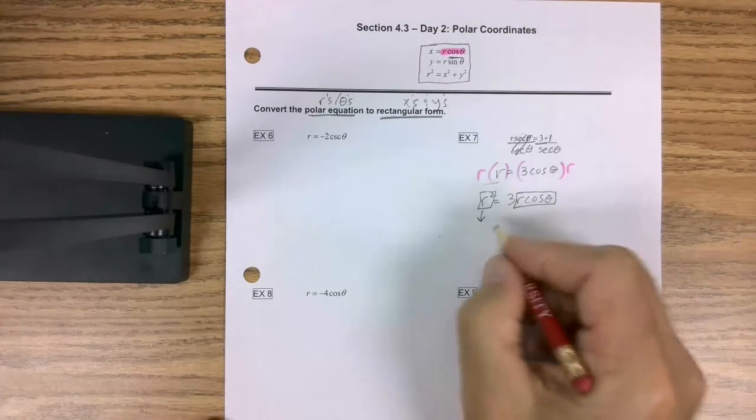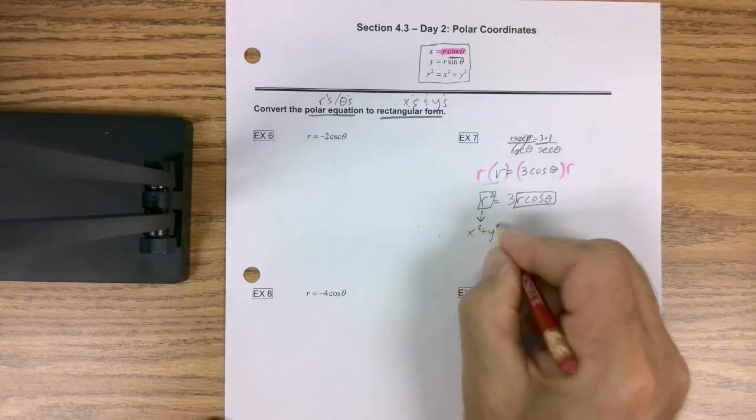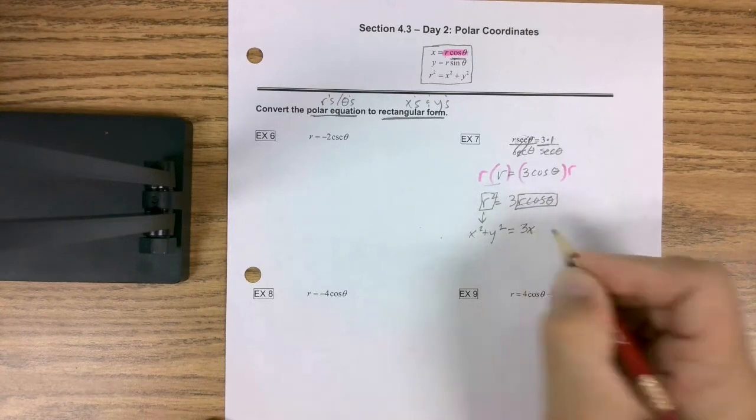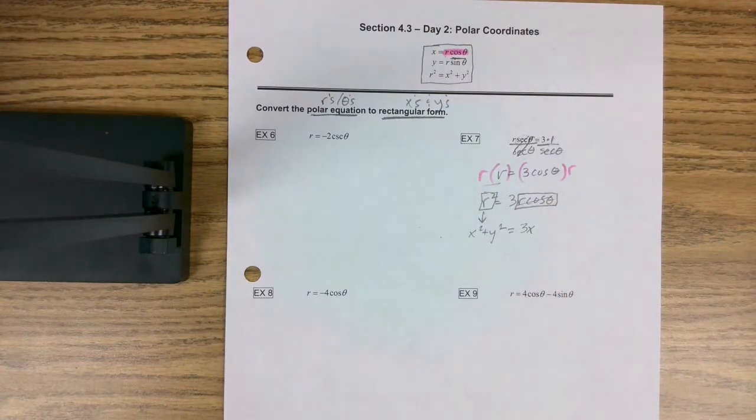What's r squared? r squared is x squared plus y squared. And what is this? Well, that equals x. And now you have a rectangular form of an equation.